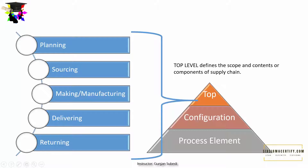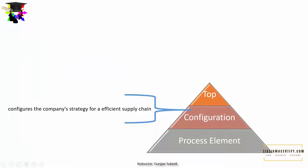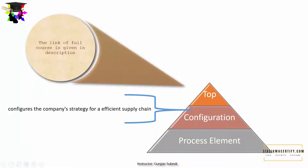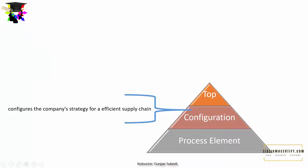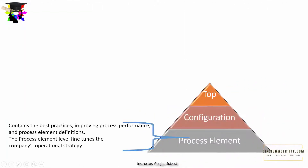The five components are planning, sourcing, making or manufacturing, delivering, and returning. The configuration level configures the company's strategy for an efficient supply chain — it's basically related to the strategy to improve the supply chain. The process element level contains best practices improving process performance and process element definition, and it fine-tunes the company's operational strategy.